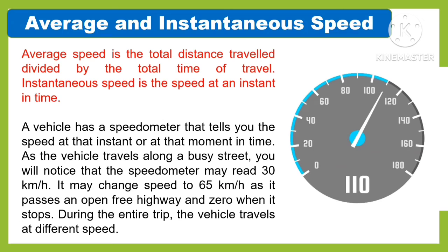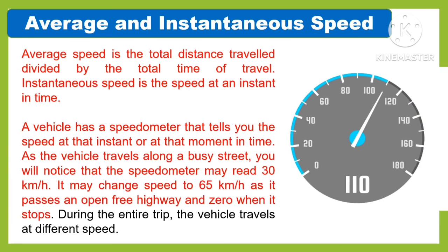Average speed is the total distance traveled divided by the total time of travel. Instantaneous speed is the speed at an instant in time. A vehicle has a speedometer that tells you the speed at that instant or moment in time. As the vehicle travels along a busy street, you will notice that the speedometer may read 30 kilometers per hour.